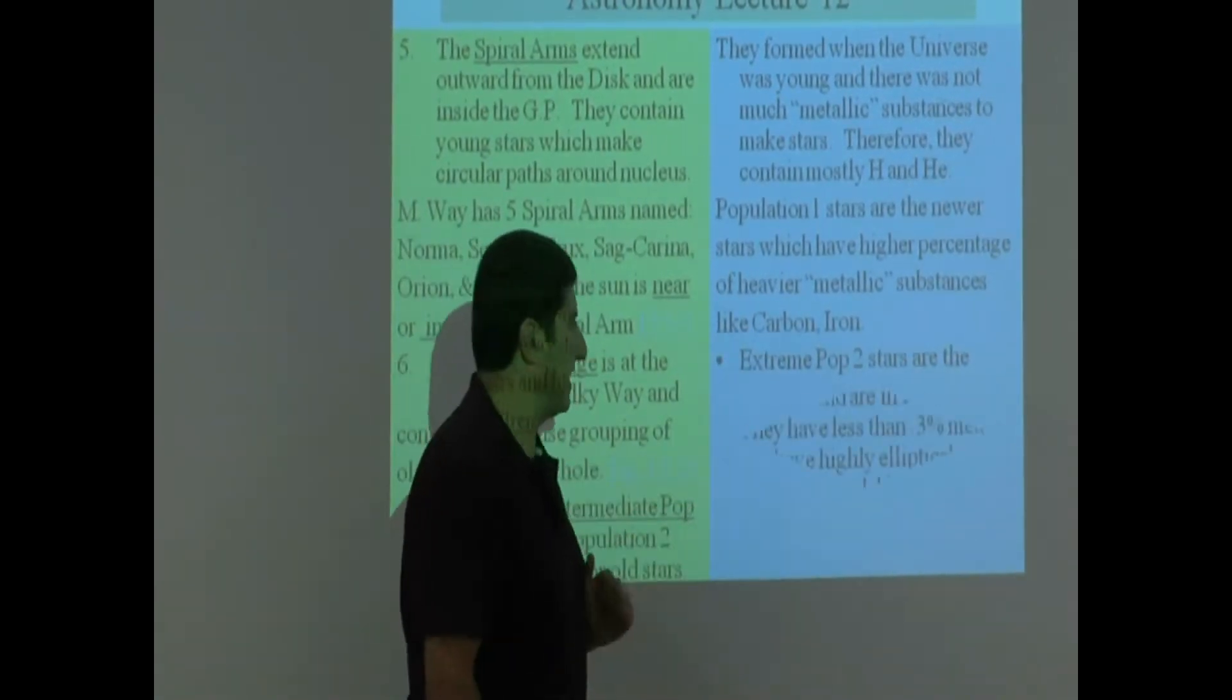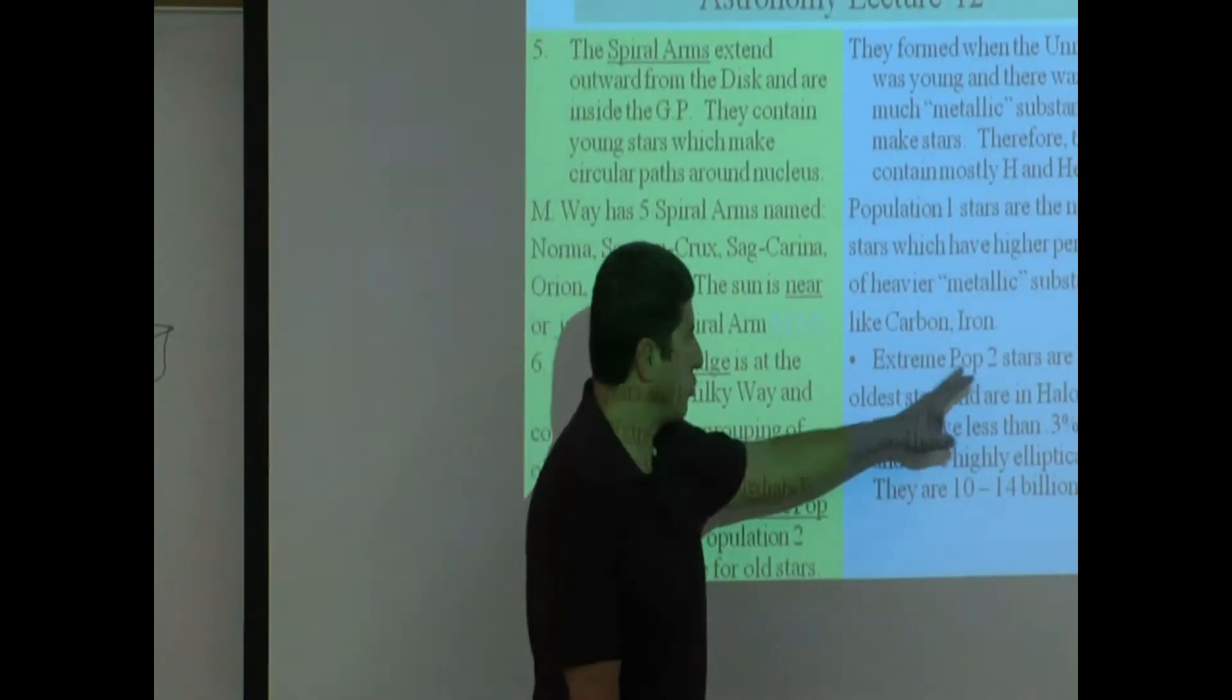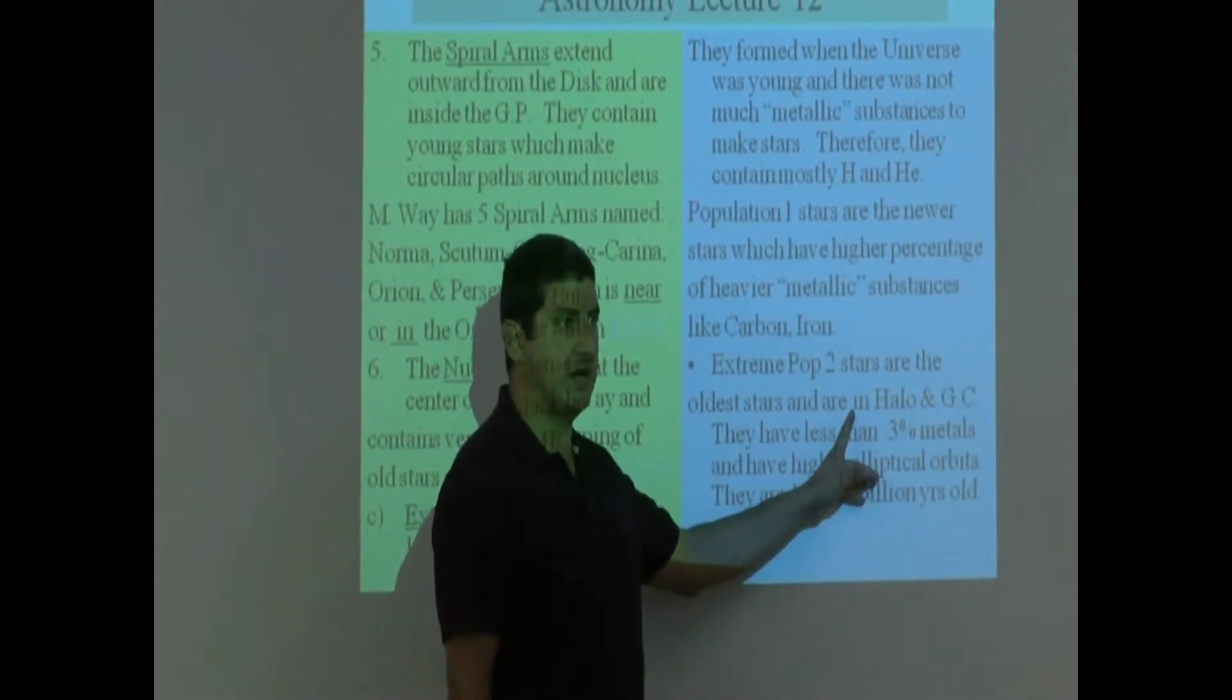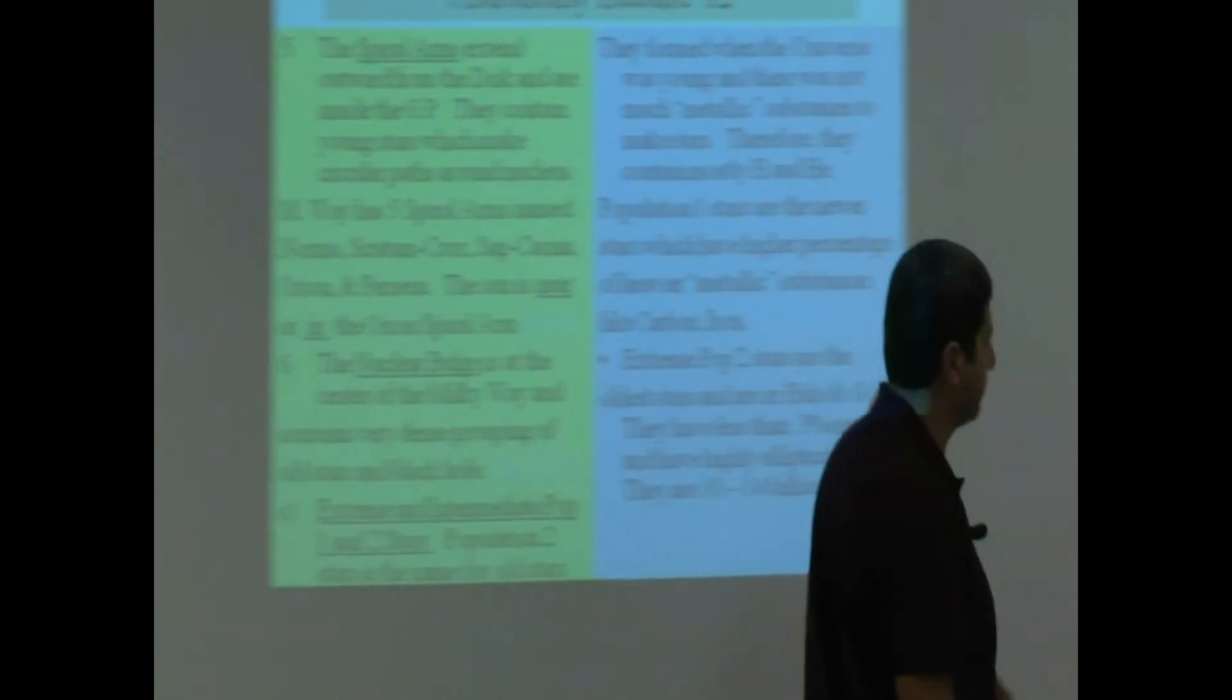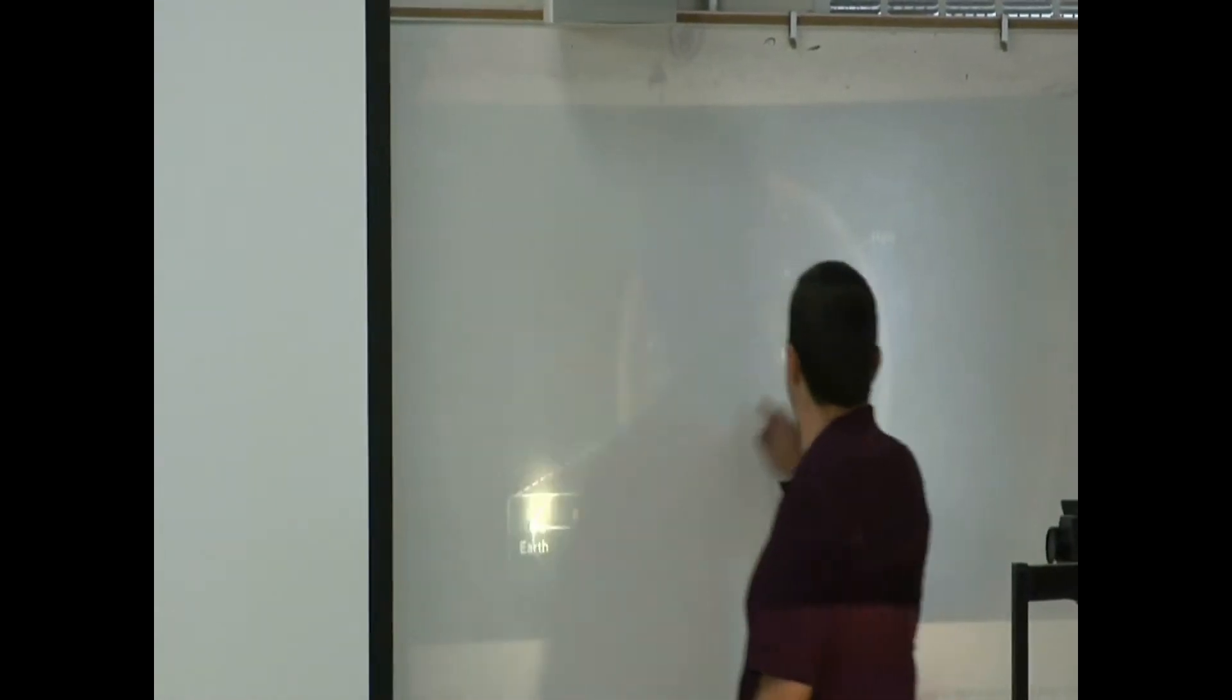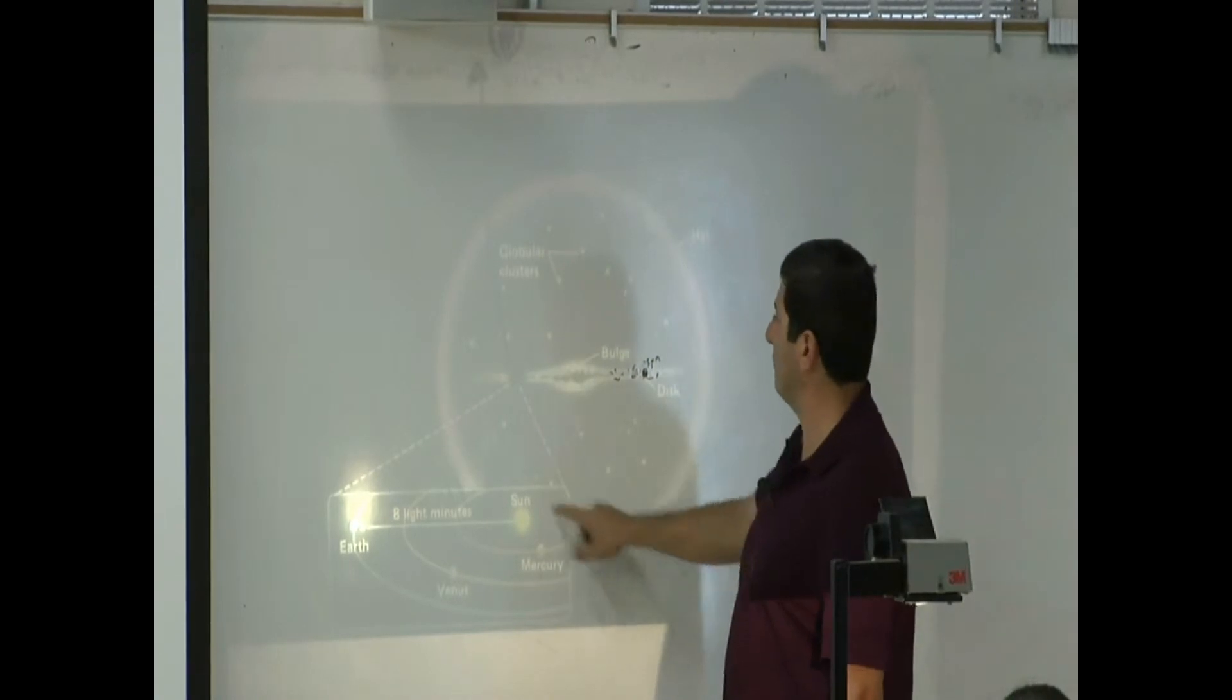Now we subclassify them. Extreme Pop 2—so we take the Pop 2 and we break it down into two groups. Extreme Pop 2, they are the oldest ones of the Pop 2 category. And where are they found in the Milky Way? They're found in the Halo. The Halo is this one, see? Those are the oldest, oldest stars. Extreme Pop 2. And they are also found in the globular clusters. GC is short for globular cluster. So those guys have the Extreme Pop 2.